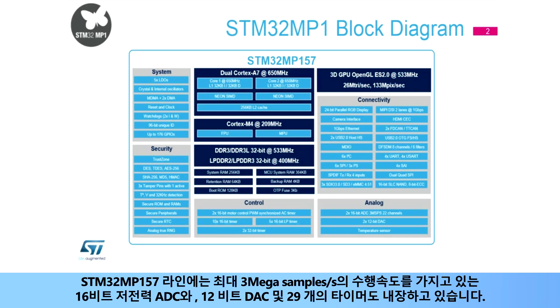The STM32 MP157 line also embeds low-power 16-bit ADCs running at up to 3 mega-samples per second, 12-bit DACs, as well as 29 timers.